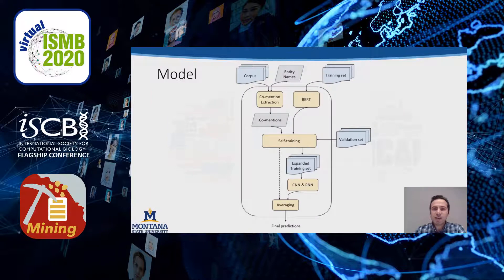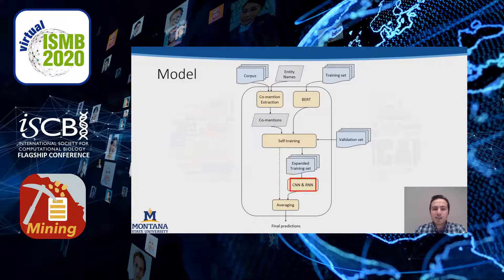Once co-mentions are extracted, we fine-tune BERT on our small labeled dataset. Next, we make predictions on the unlabeled co-mentions, and using the validation set and self-training, we expand the training set. Using the expanded training set, we develop two models based on convolutional neural networks and recurrent neural networks.